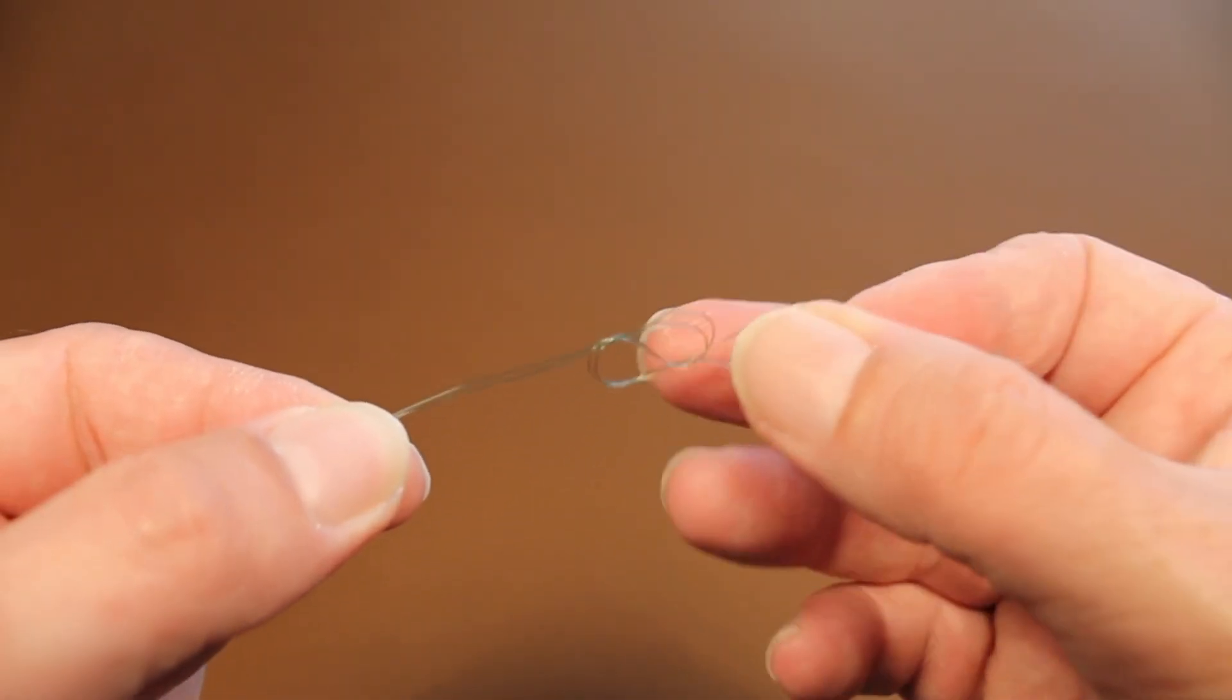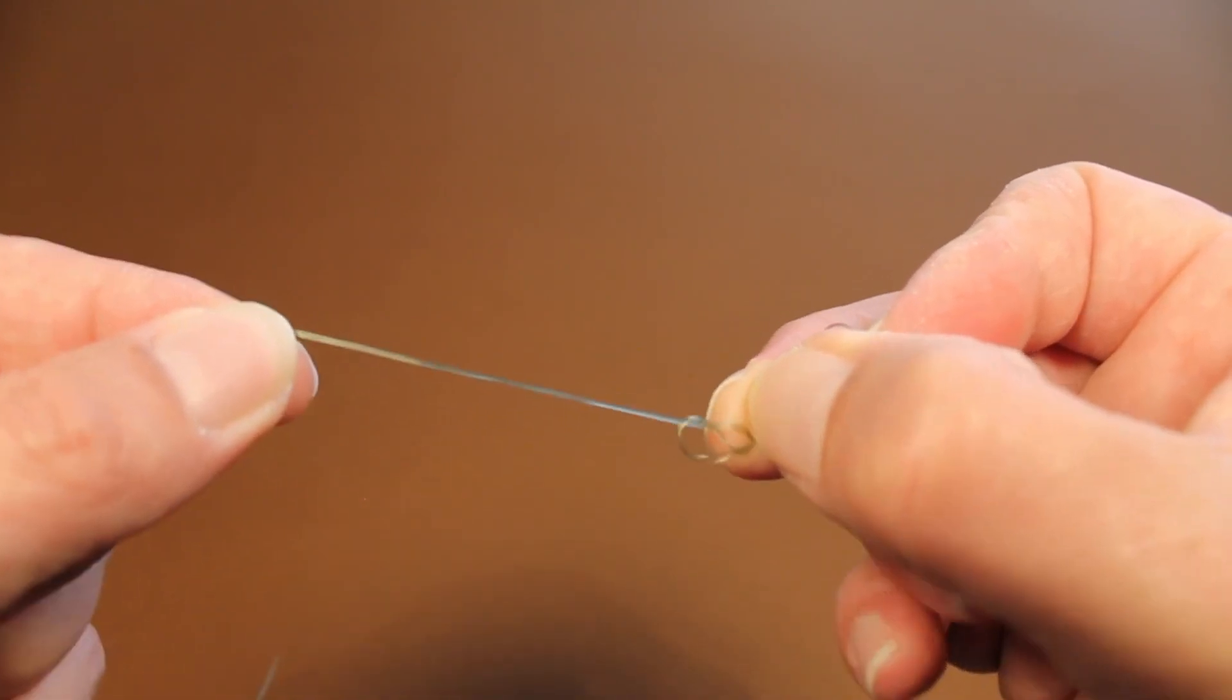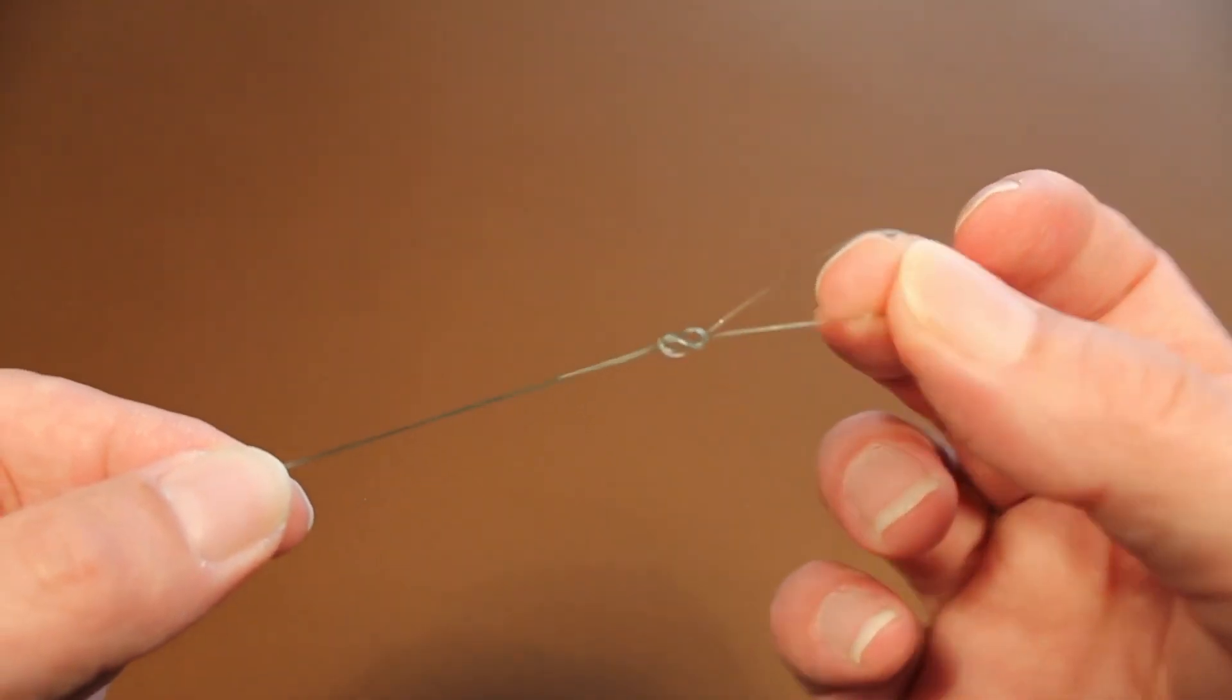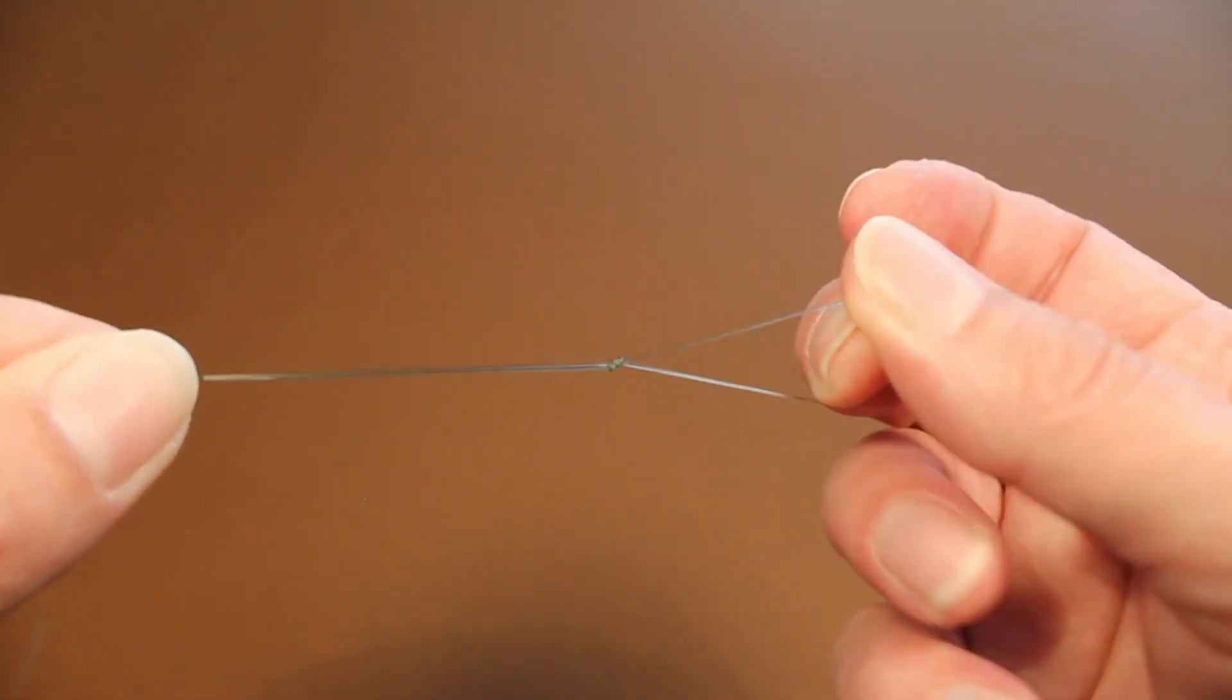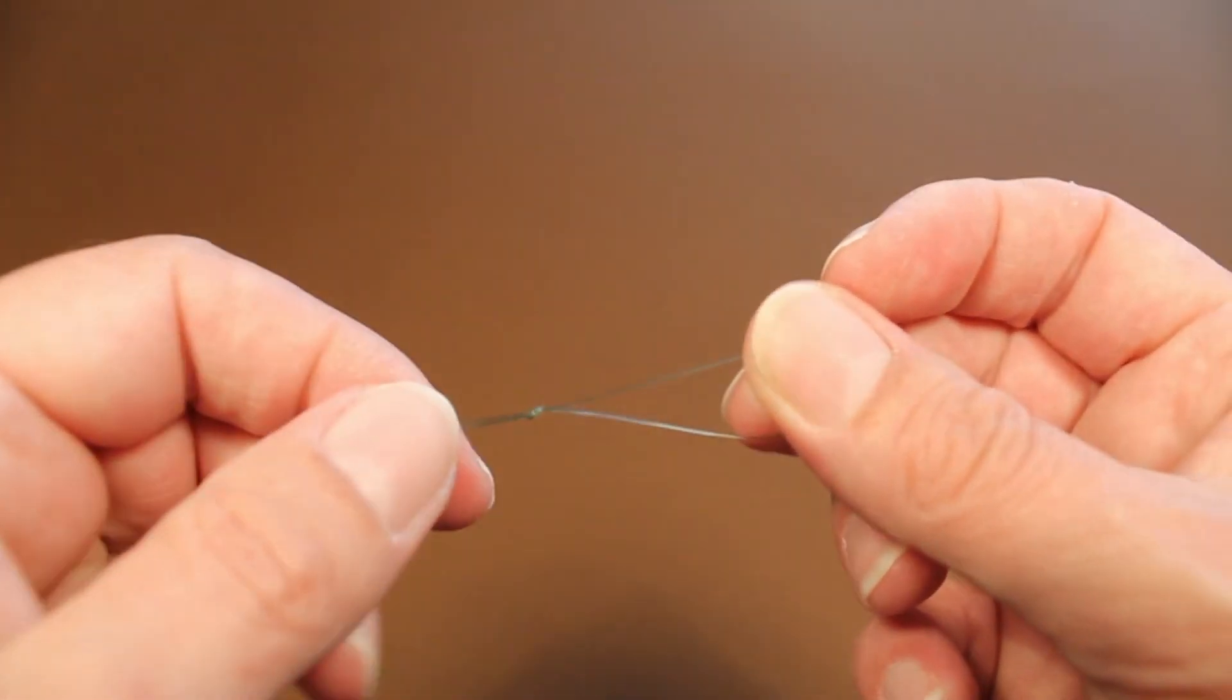Moisten the knot with saliva. Hold the knot as you pull it down to reduce the size of the finished loop. Pull tight and cut off the tail end.